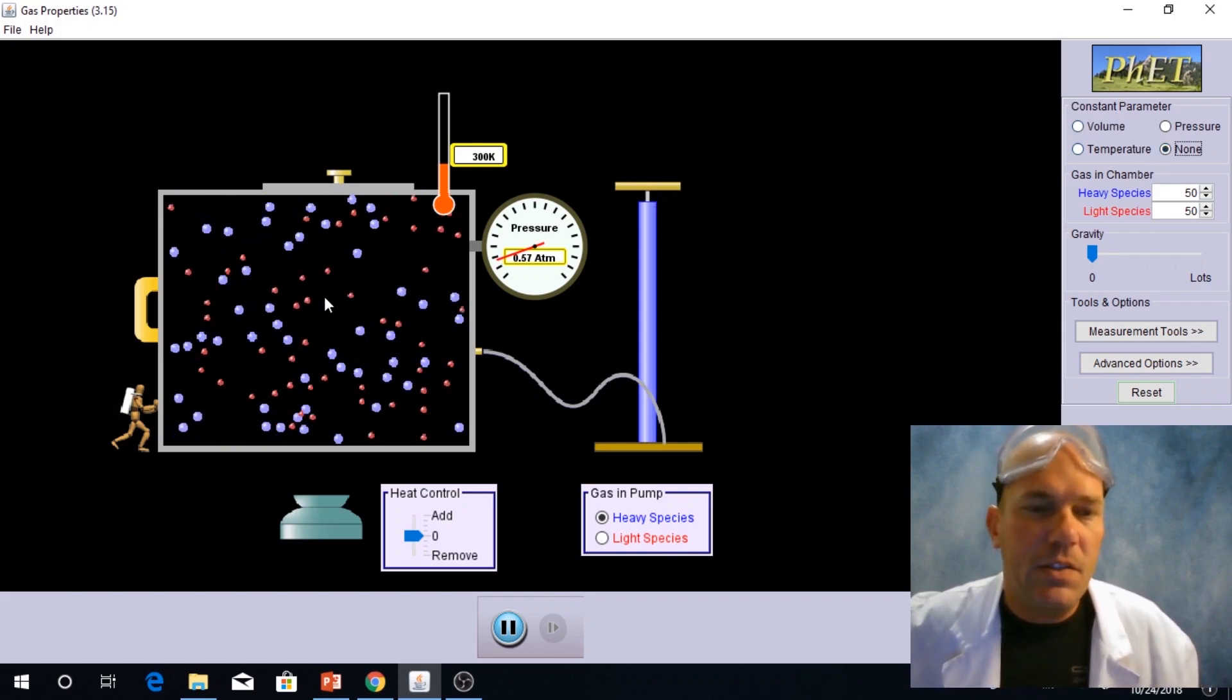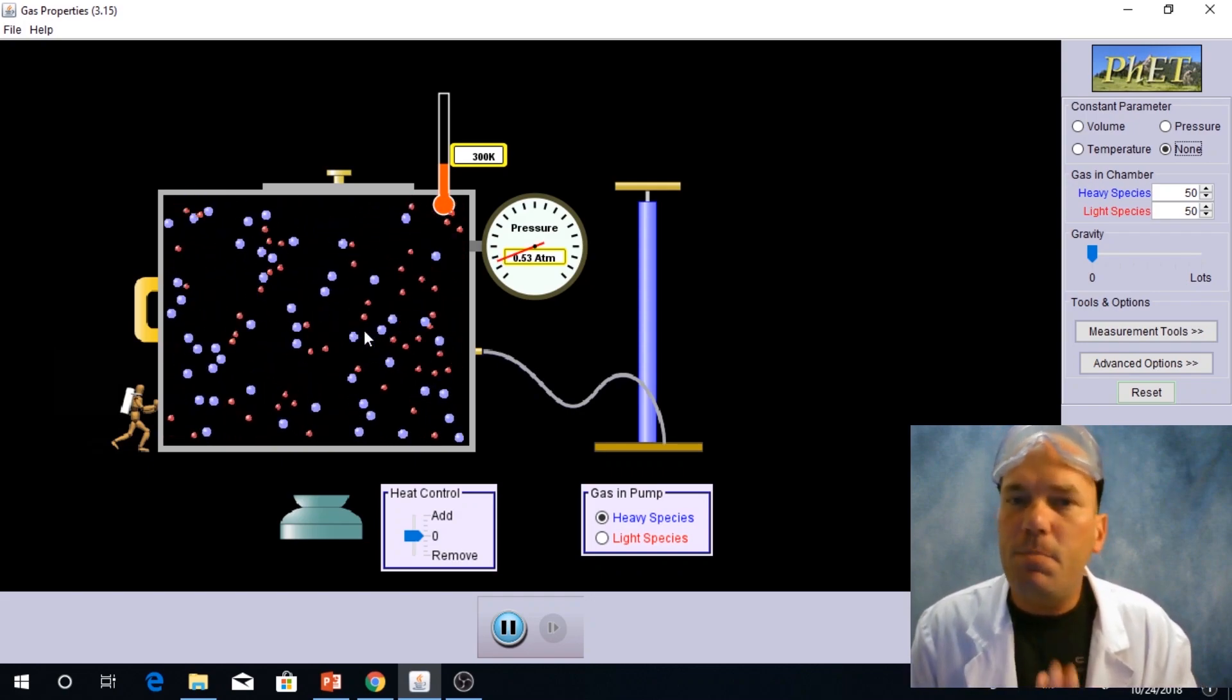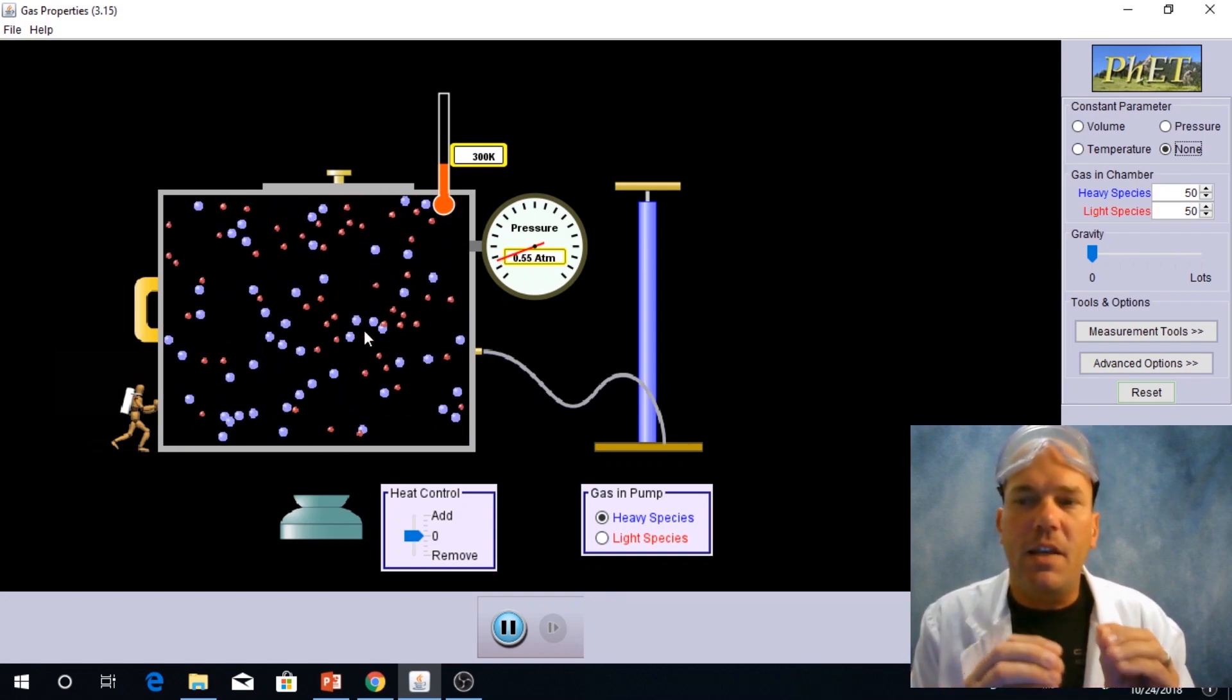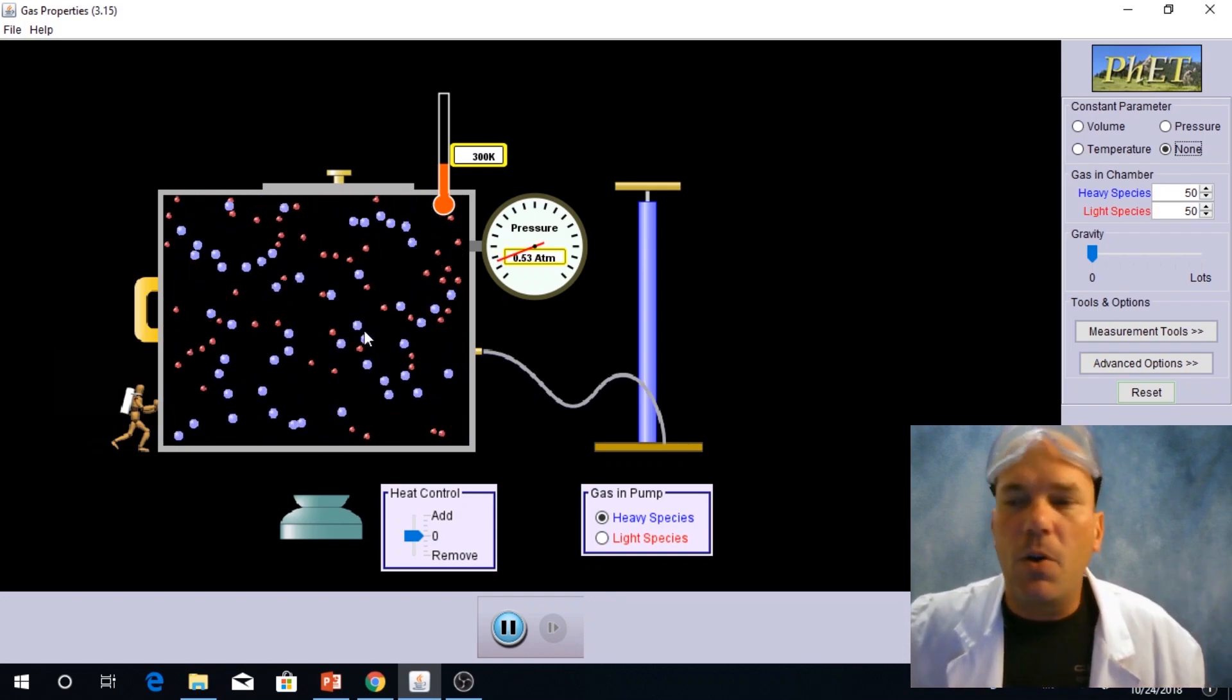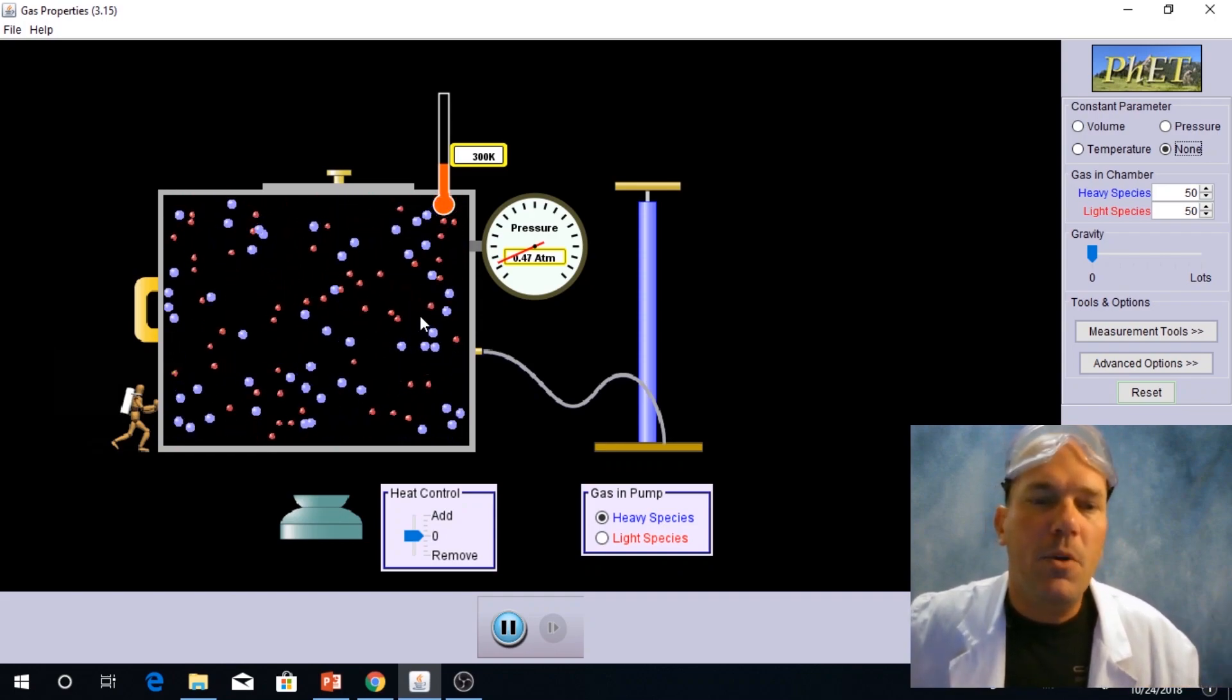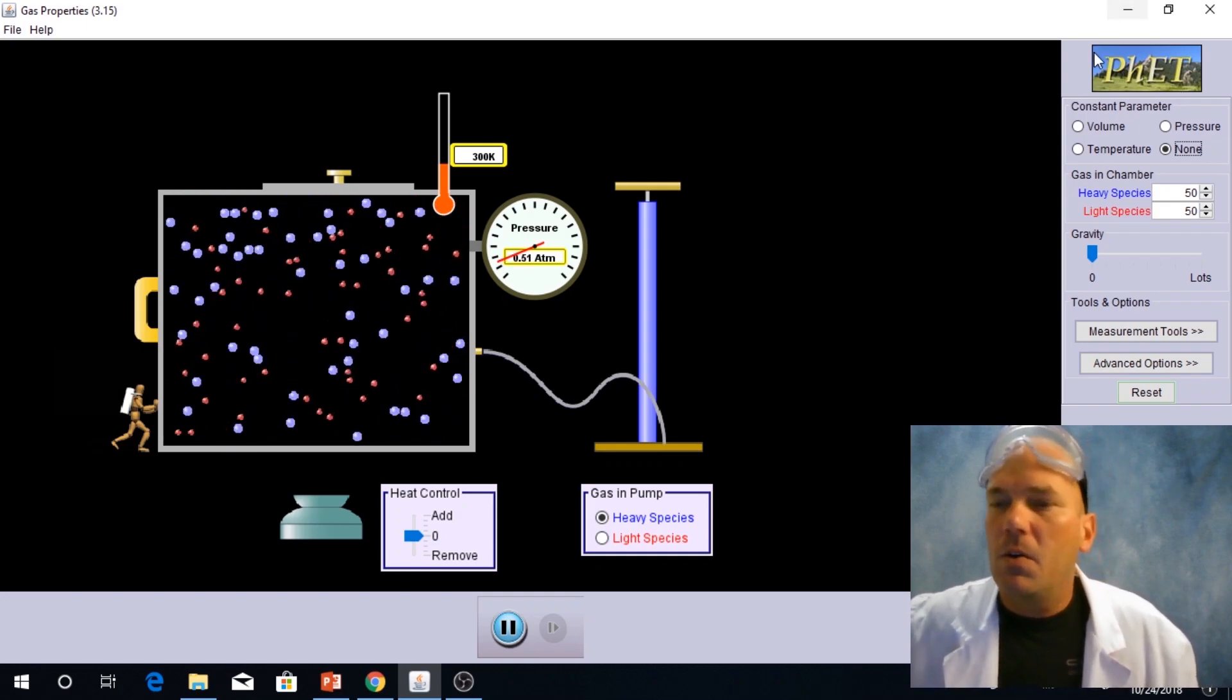So we can just take a look at what's happening here. I want to point out the speed or the magnitude of velocity of these individual species. Notice how the lighter species in red are moving faster than the heavier species in blue.